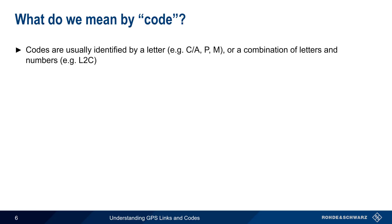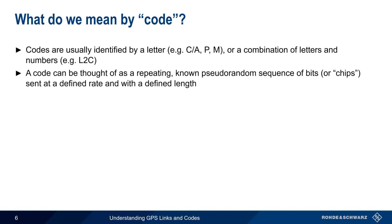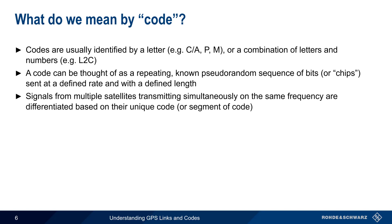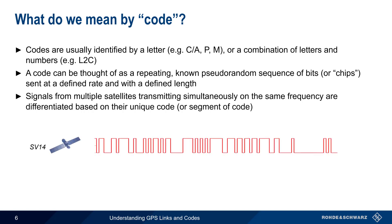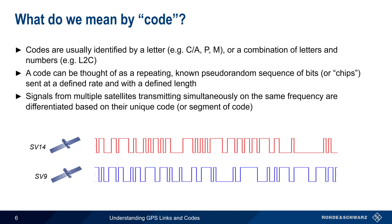As you may have noticed, all codes are identified by a letter or combination of letters and numbers. Codes are essentially a repeating, known, pseudorandom bit sequence, sent at a defined rate and with a defined length. In GPS, you'll often hear the word chips used instead of the word bits. All GPS satellites transmit simultaneously on the same frequency, but they can be distinguished based on their unique code or segment of code. Here, one satellite, Space Vehicle 14, is transmitting one code, while another satellite, Space Vehicle 9, is transmitting a different code.